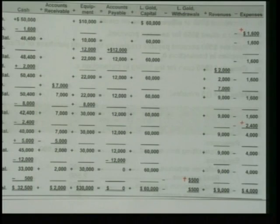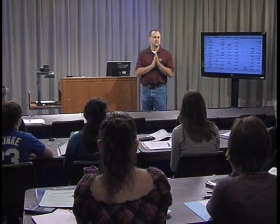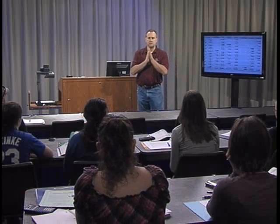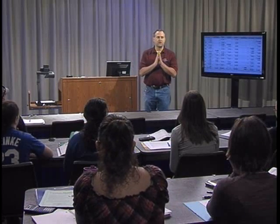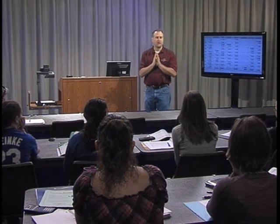Transaction I: paid twelve thousand dollars cash to settle the liability created in transaction C — cash goes down by twelve thousand and accounts payable goes down by twelve thousand. Transaction J: the owner withdrew five hundred dollars cash for personal use — cash goes down, withdrawals goes up (which decreases equity). The accounting equation still holds after all transactions.